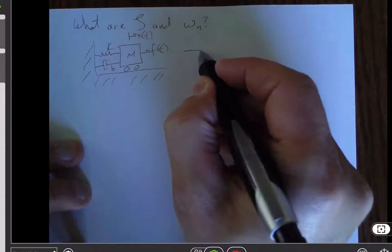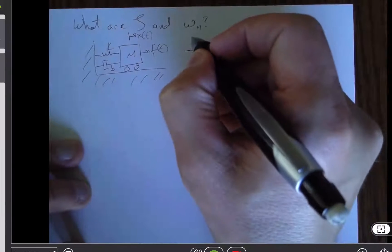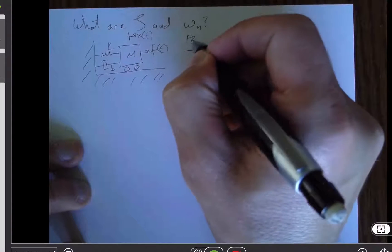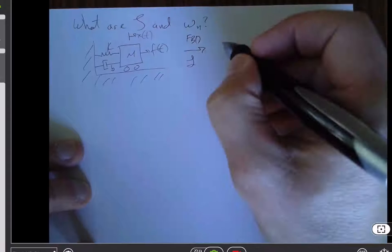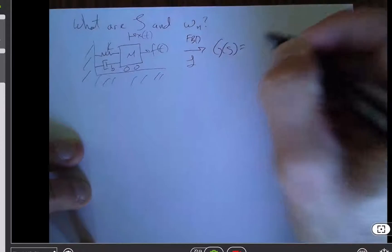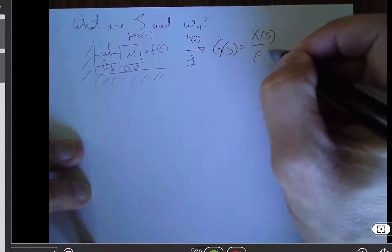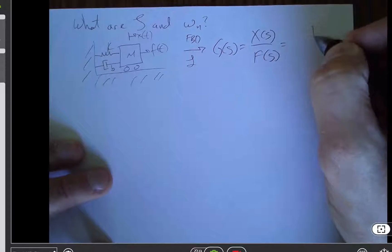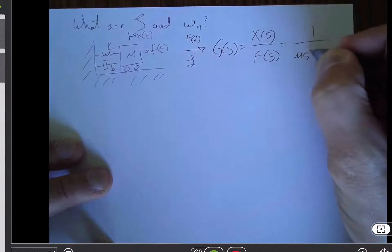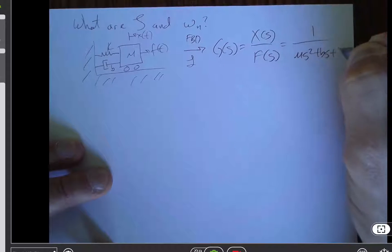Okay, in our previous video, we talked about how to take this system, draw a free body diagram, and through the help of a free body diagram and a Laplace transform, we ended up with the transfer function x of s over f of s, which we'll call g of s, is 1 over ms squared plus bs plus k.